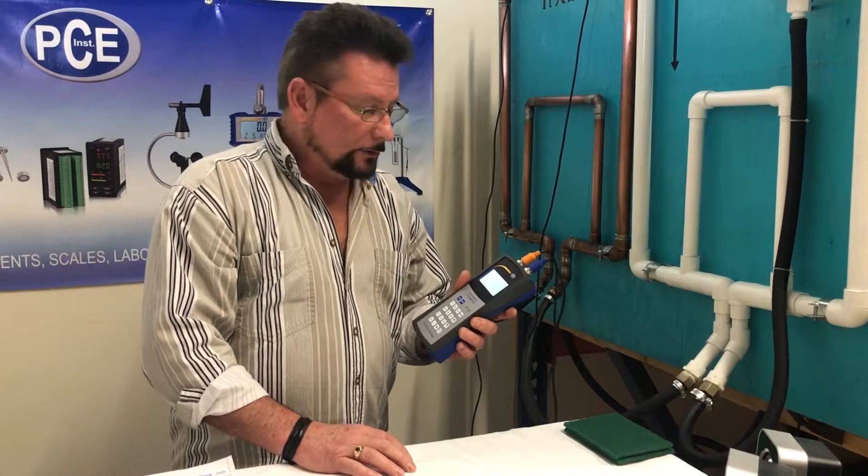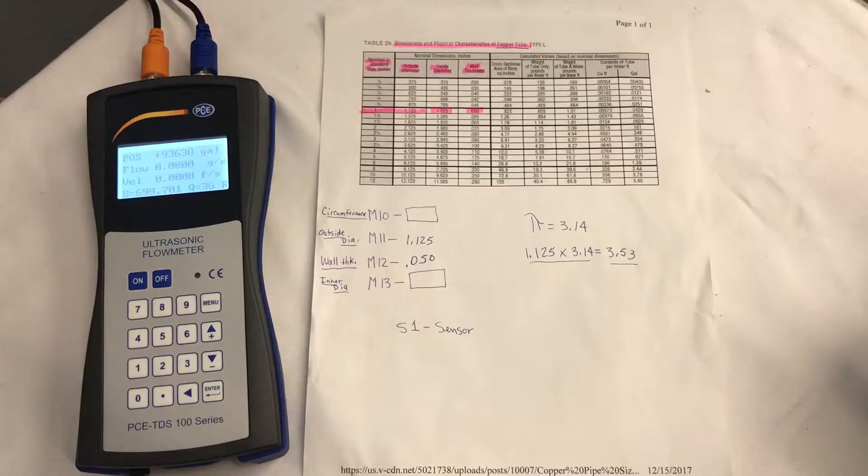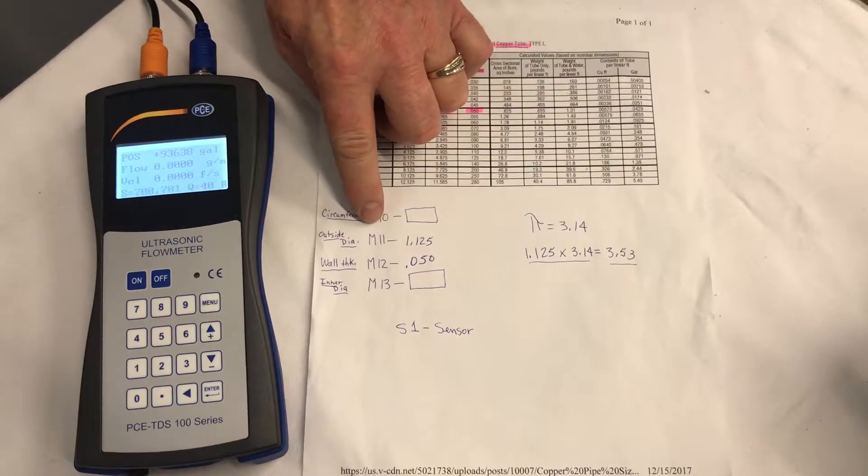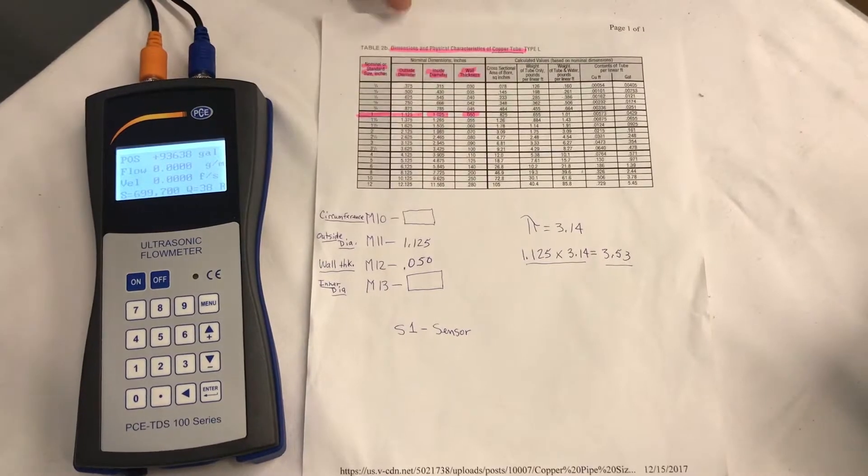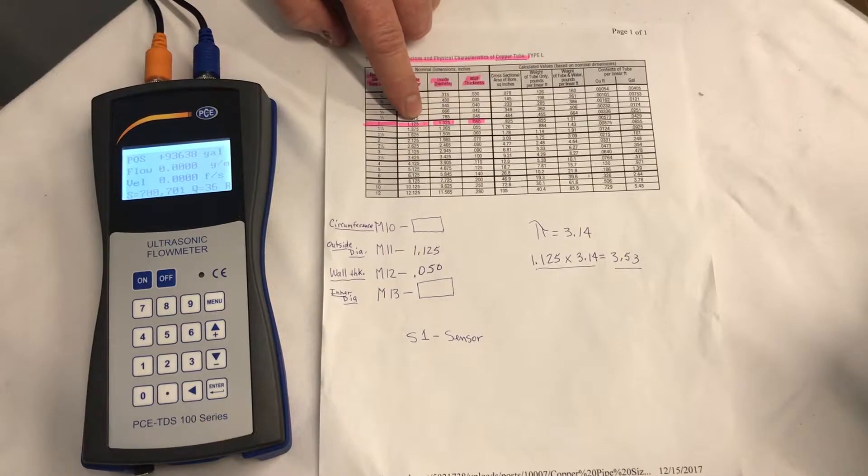Now we're ready to put the parameters into the meter for the pipe. We're going to do the outside diameter, which is M11, and it's on our chart. Outside diameter for one inch pipe is 1.125.